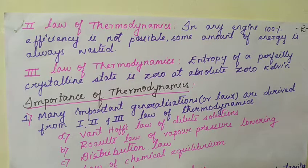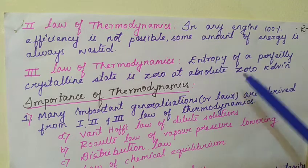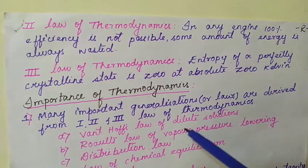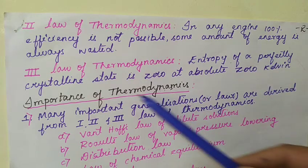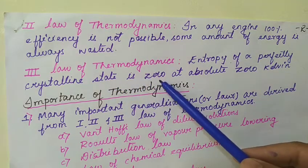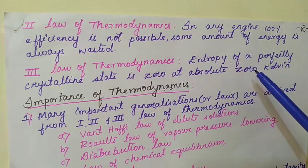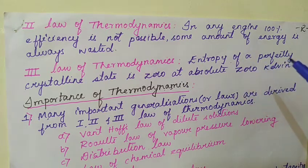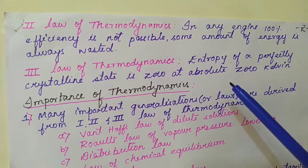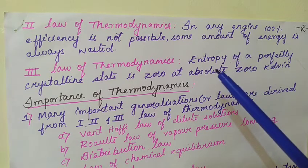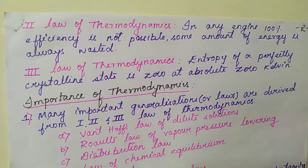Thermodynamics only depends on two important generalizations — the first and second law. The third law of thermodynamics is derived from the second law itself and can be stated as: the entropy of a perfectly crystalline state is zero at absolute zero Kelvin. We will discuss the meaning and importance of the third law in future topics. For now, try to remember all three important laws — first, second, and third law of thermodynamics.